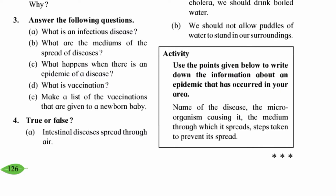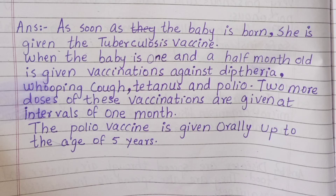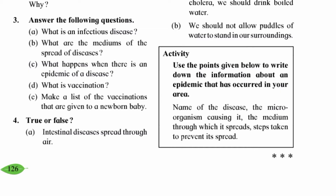Question three E: Make a list of the vaccinations given to a newborn baby. As soon as the baby is born, she is given the tuberculosis vaccine. When the baby is one and a half months old, vaccination is given against diphtheria, whooping cough, tetanus, and polio. These vaccinations are given at intervals of one month. The polio vaccine is given orally up to the age of five years.